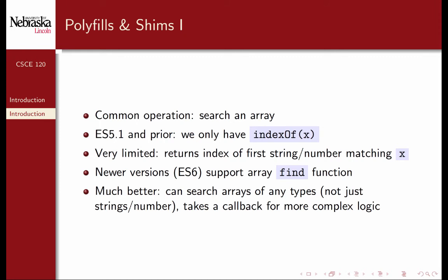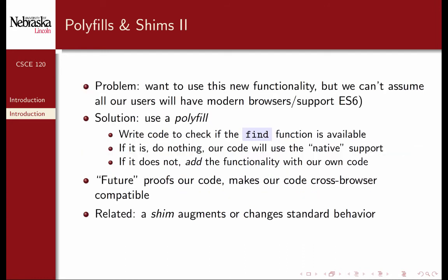However, newer versions, ES6 and above, support an array find function, which is much better. You can actually search an array of any type, not just strings or numbers, and it takes a callback that you can perform more complex logic with. Our problem is that we want to use this new functionality in our application and in our code base, but we can't always assume that all of our users will have modern browsers that support the latest version of JavaScript. The solution is to use a polyfill.